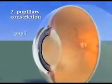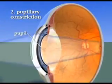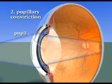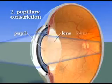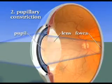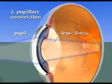Second, the pupil must constrict to restrict the entry of light rays diverging from a near object, since diverging rays cannot be bent enough by the periphery of the lens to make them fall on the fovea. If the pupil were to remain dilated, the image would be blurred.